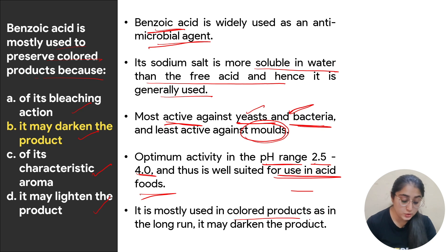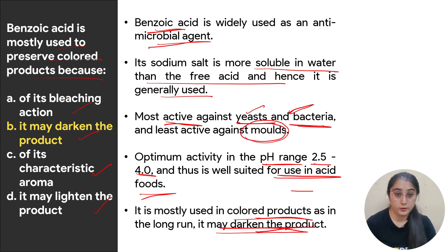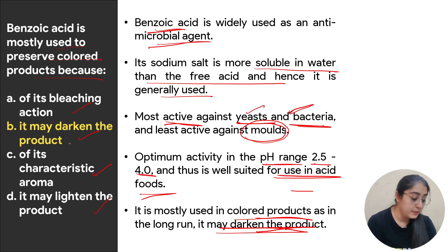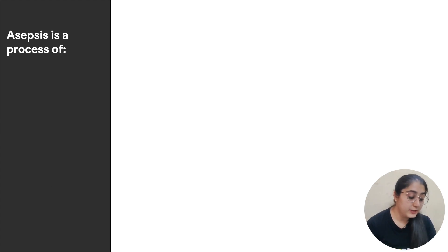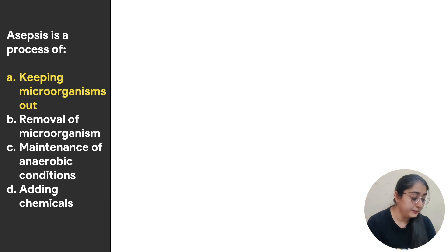Benzoic acid is generally used only in colored products because in the long run it may darken the product. Therefore the correct answer is: because it may darken the product — this is the reason it is mostly used to preserve colored products.